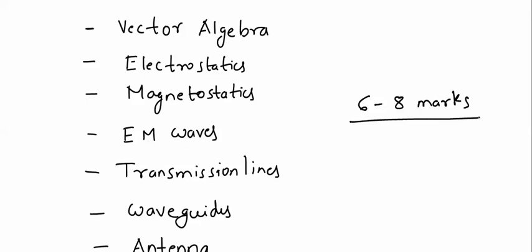That is the difference. If you observe the other subjects, they are completely based on one particular concept. But this subject is not like that. Here, you will find many variables and many concepts. Therefore, this subject is lengthy. And the questions which are being asked in GATE, they are not that difficult. They are really very easy. Once you know the concepts, you can easily go for the questions of Electromagnetics.